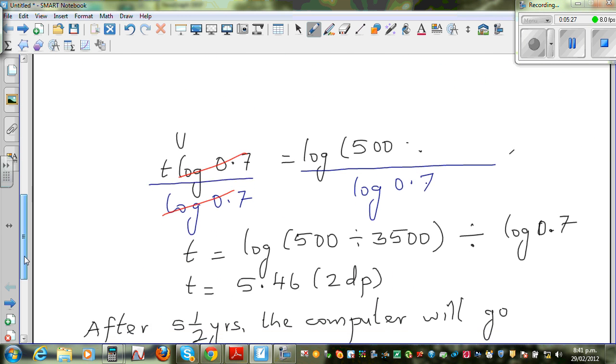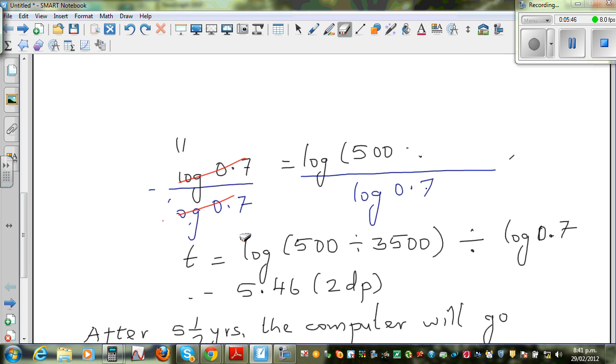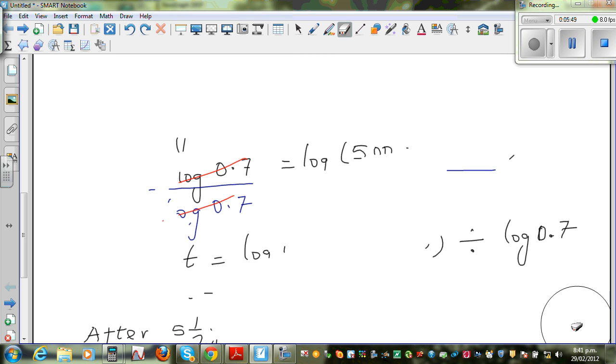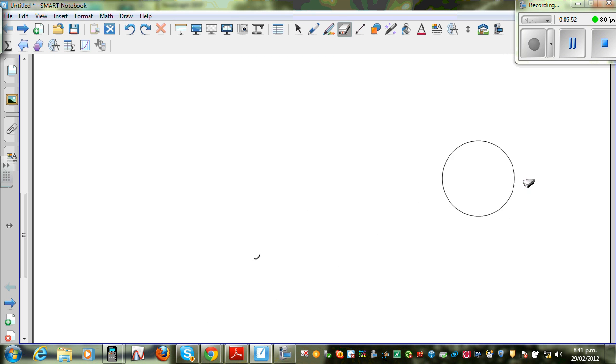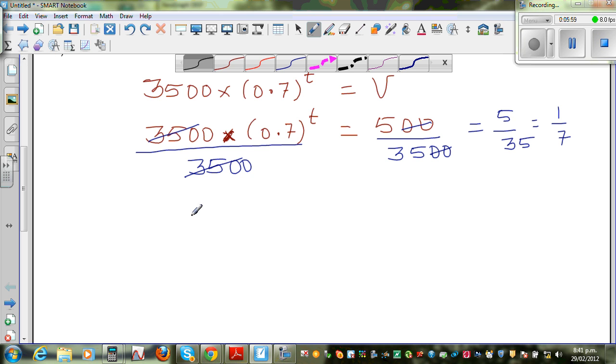So this is (0.7)^t = 1/7. Now to get rid of this t in the power, I'm going to take log of both sides. So I can say log(0.7)^t = log(1/7).